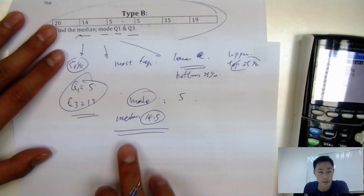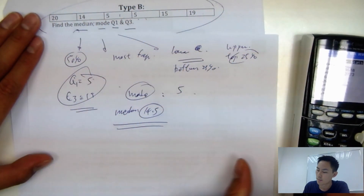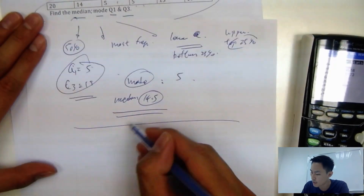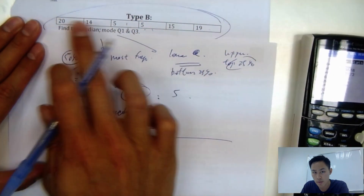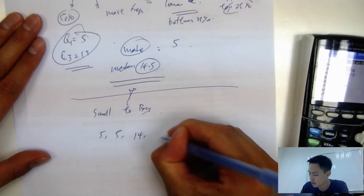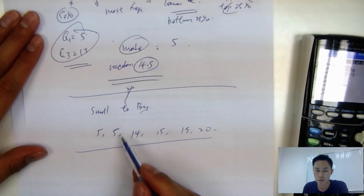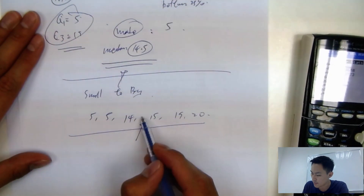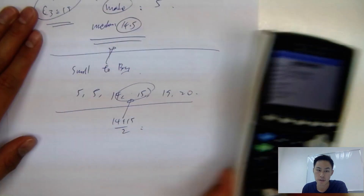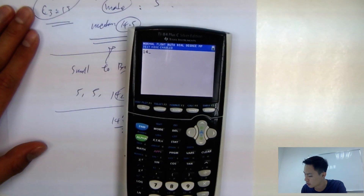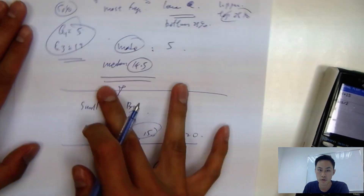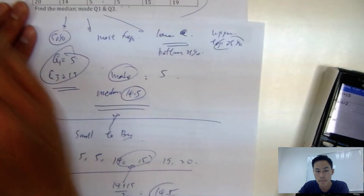If you want to calculate the median by hand, first list all numbers from smallest to largest: 5, 5, 14, 15, 19, 20. With six values, there's no single middle number, so take the average of the two middle values: (14 + 15) ÷ 2 = 14.5. But your calculator already does this for you, so don't worry about doing it by hand.